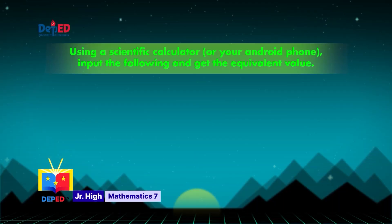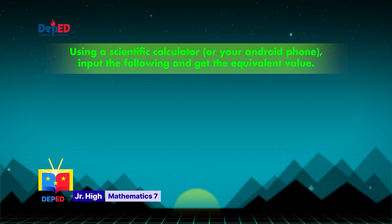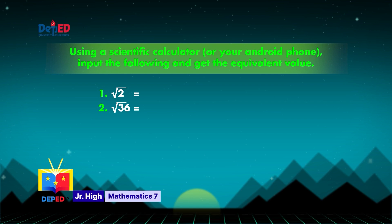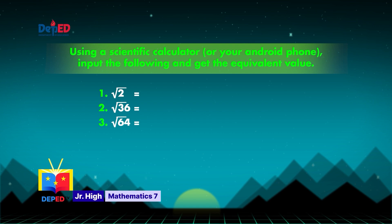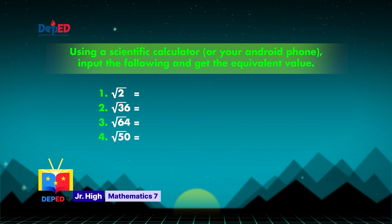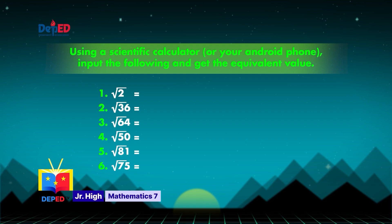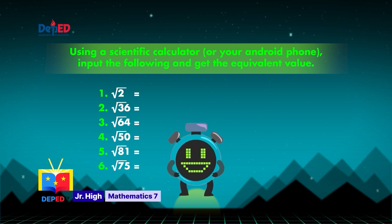Using a scientific calculator, input the following and get the equivalent value. Round off your answer to the nearest hundredths. Number 1: square root of 2. Number 2: square root of 36. Number 3: square root of 64. Number 4: square root of 50. Number 5: square root of 81. And number 6: square root of 75. Timer!